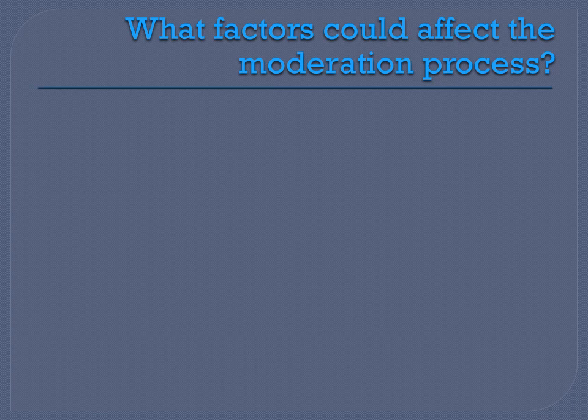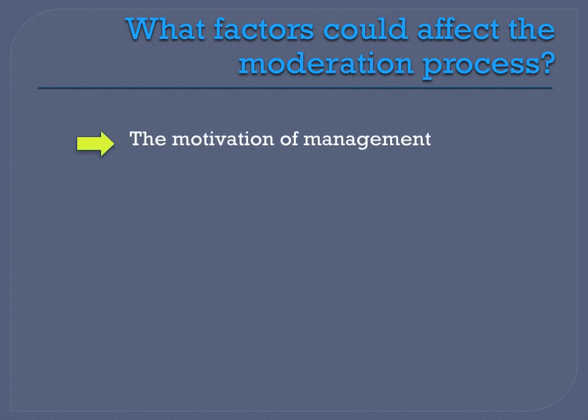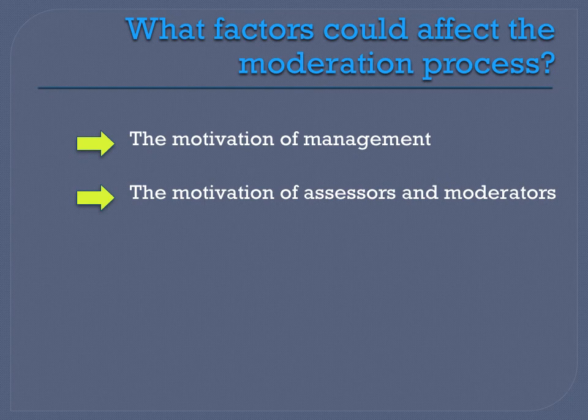What factors in a school could affect or prevent a moderation process from being successful? There are a number of factors. The first, and probably the most important, is the motivation of management to ensure that a thorough and effective process actually takes place continuously. Then, of course, the motivation of the assessors and moderators — if they're not motivated to do it, they're not going to do it properly or effectively.